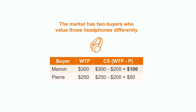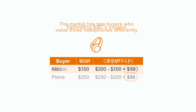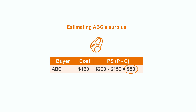However, Pierre finds them a bit big and uncomfortable to wear. He would pay $250. As we saw previously, in order to estimate the consumer surplus, we had to calculate the difference between each willingness to pay and the actual price of the headphones. Supposing that the headphones are being sold at $200, we can easily deduce that Manon's consumer surplus is $100 and Pierre's is $50. The same methodology follows when estimating ABC's surplus. Producer surplus comes from deducting the cost that ABC has to produce the headphones from the actual price — we can see that it results in $50.